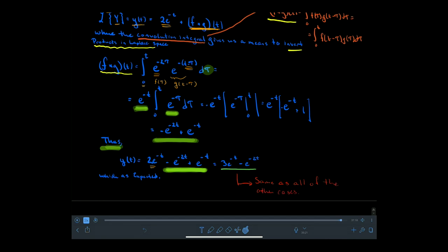So y of t is 2e to the negative t (siphoned off earlier) plus the convolution result of negative e to the negative 2t plus e to the negative t, which simplifies to the same solution as all the other cases. We avoided most algebraic technique, arrived at products, and the convolution integral maps products back — applying the formula gives the same result. The end statement about Laplace is: it makes the solution readily visible in Laplace space, and then algebra or advanced calculus brings it back to the time domain. In the long run, since it uses an integral, this technique can handle functions that the method of undetermined coefficients cannot.